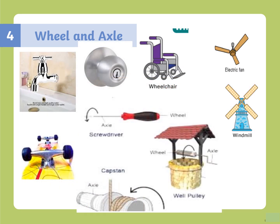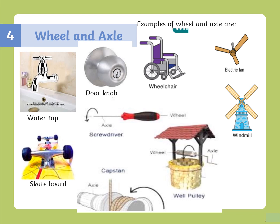Various examples of wheel and axle in day-to-day life are: water tap, doorknob, wheelchair, electric fan, windmill, hull, pulley, skateboard, and screwdriver. Note that the screwdriver is an example of wheel and axle, whereas the screw itself is an example of the simple machine screw.